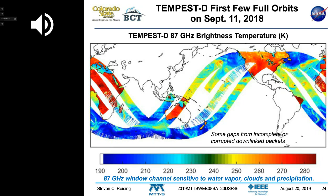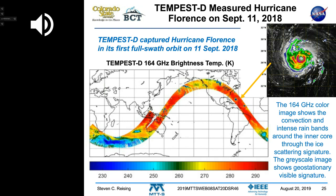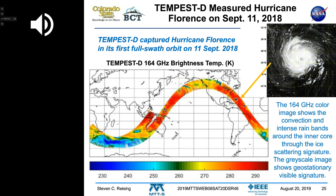We measured Hurricane Florence, which unfortunately made landfall in North Carolina some days later. The grayscale image is from geostationary satellites, and the color image is from Tempest D. Tempest D peered into the storm, looked at the strength of the rain bands, and measured at 164 GHz.